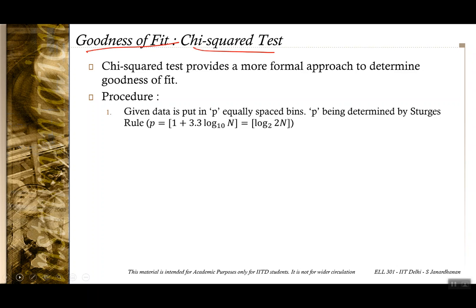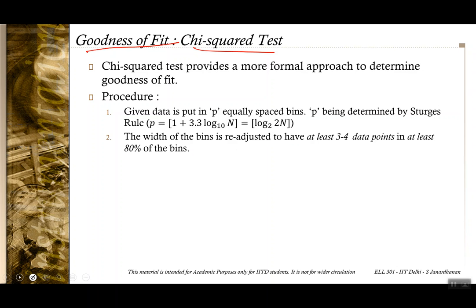Here is the procedure: whatever data you have is put into p equally spaced bins, with p determined by the Sturges rule. Next, if required, adjust the width of the bins so that at least three to four points are in at least 80% of the bins, so no range is grossly underrepresented. With very few points you cannot determine whether it is Gaussian — you should start with n being large enough.